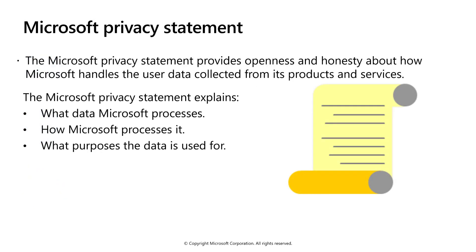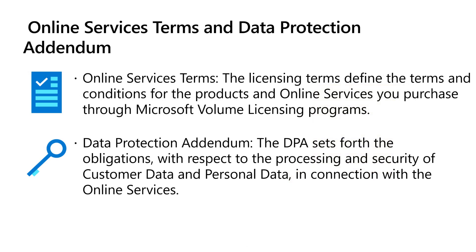Microsoft receives questions about its exact stance on privacy, what data is collected from products and services, how it's processed, and what it's used for. All of that information may be found in the Microsoft Privacy Statement at Microsoft.com/privacystatement. Two other important documents are the Online Services Terms, which define terms and conditions for products and online services purchased through Microsoft volume licensing, and the Data Protection Addendum, which sets obligations for processing and security of customer and personal data in connection with online services.